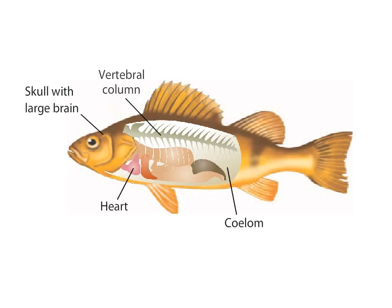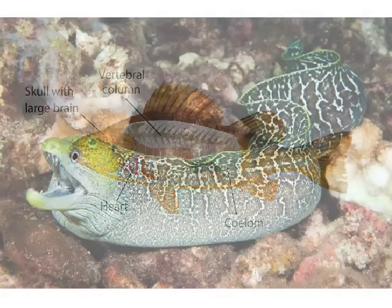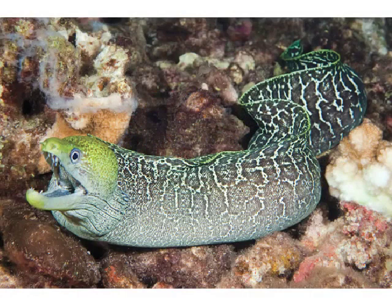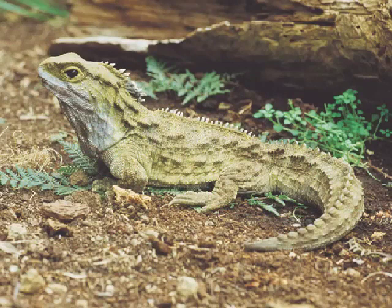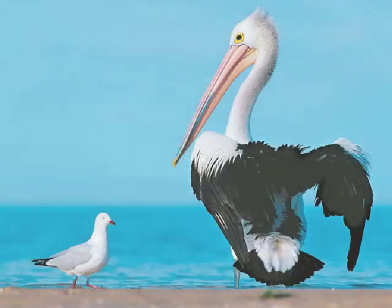Specialized structures for locomotion, such as fins, and feeding, such as jaws and teeth, evolved among the vertebrates. The evolution of these features allowed many vertebrates to become large, active predators, which in turn allowed the vertebrates to diversify widely, including to living on land.